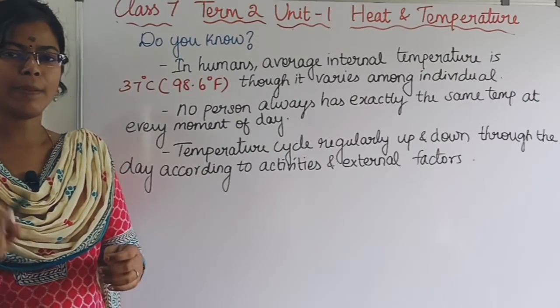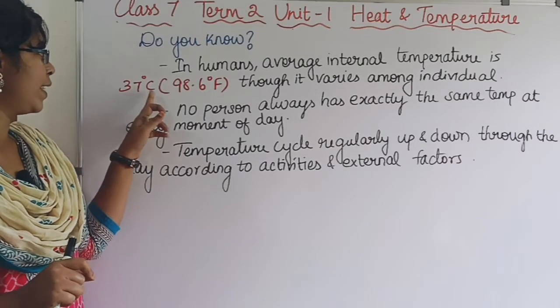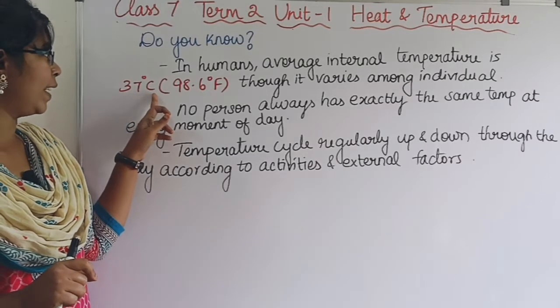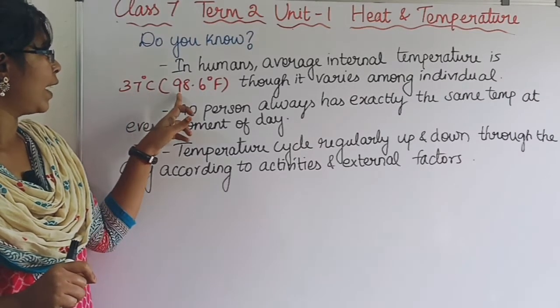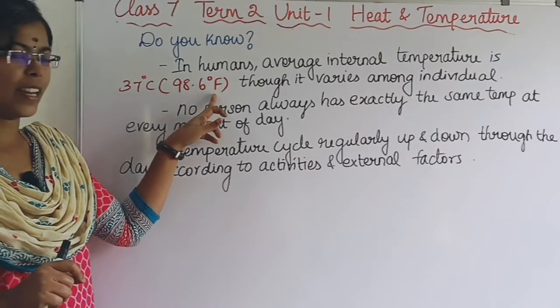The average internal body temperature of a person is 37 degrees centigrade or 98.6 degrees Fahrenheit.